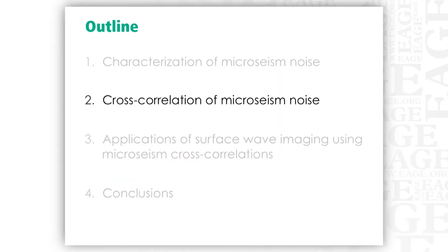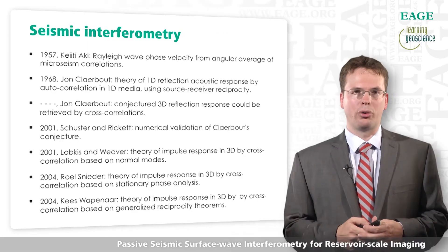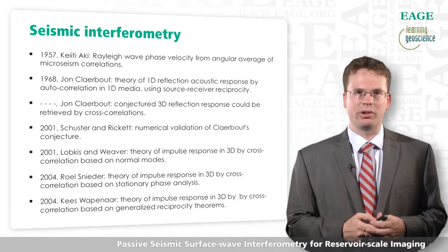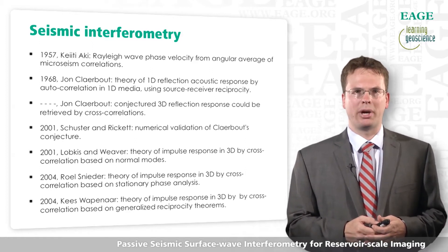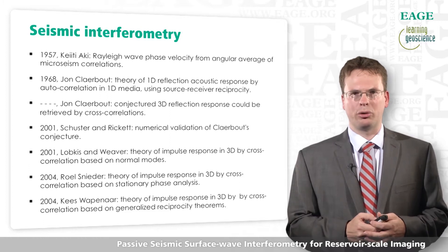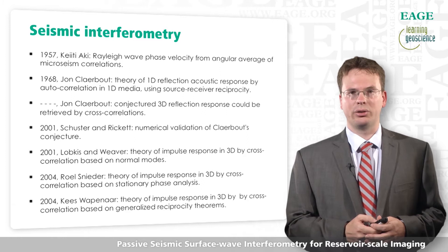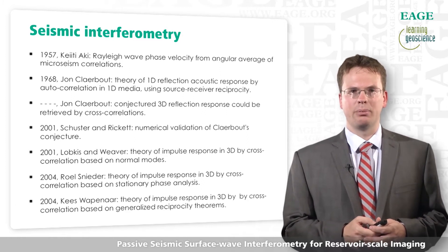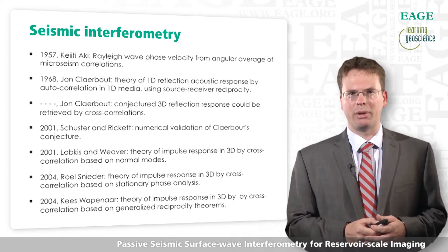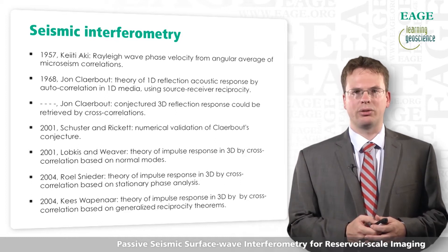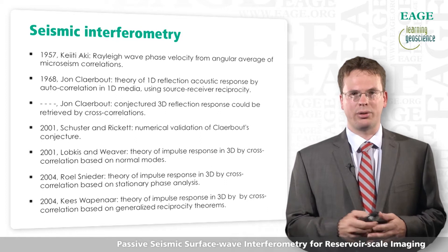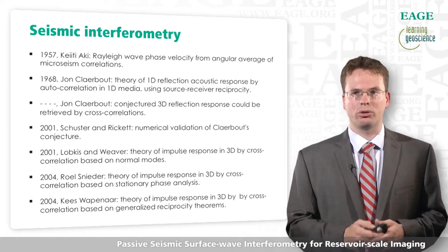Seismic interferometry has a long history, even starting before 1957. In the earth sciences, Aki already predicted that you can retrieve the surface wave phase velocity from angular averaging of microseismic correlations. Claerbout was the first to show that from an autocorrelation of a 1D transmission response, you can retrieve the 1D reflection response. He then conjectured this could be extended to 3D using cross-correlations. After numerical experiments by Schuster and Rickert, it was shown by Lobkis and Weaver using normal modes, by Roel Snieder using stationary phase analysis, and by Wapenaar using generalized reciprocity theorems, how this extends to 3D and how you can retrieve the full elastodynamic impulse response from cross-correlations of noise.